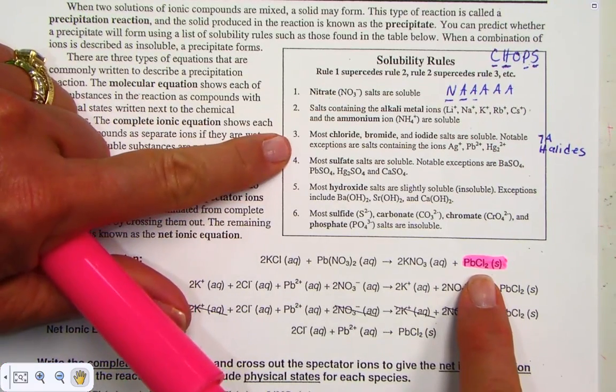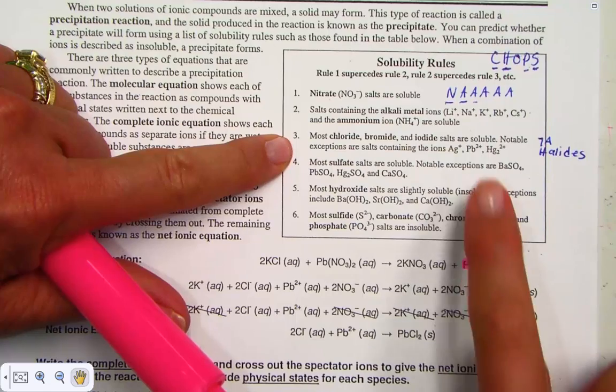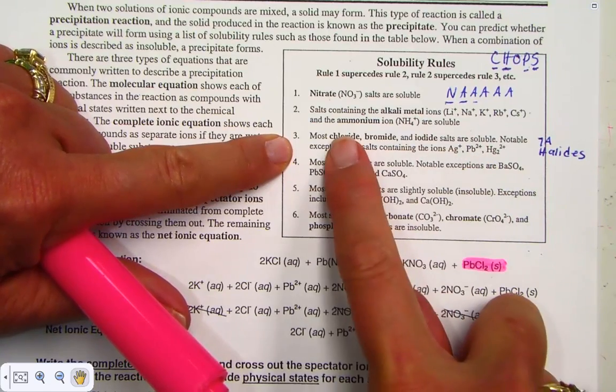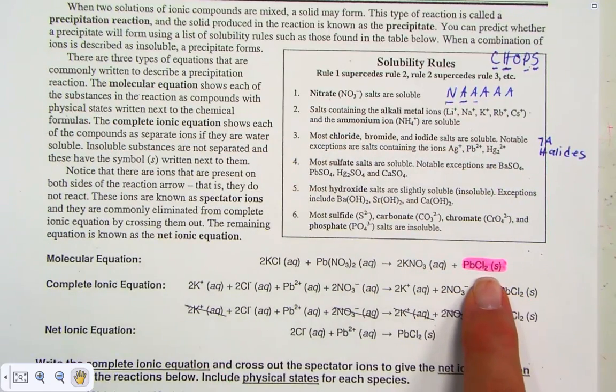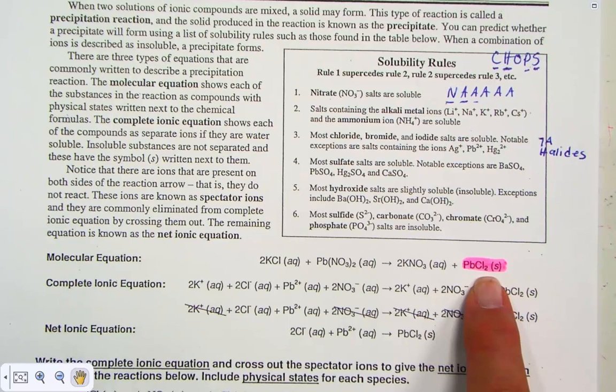Notice rule number 3: Here's chloride hooked to a lead. Lead chloride is an insoluble product. We call that our precipitate.